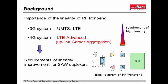Now I start from the background. Linearity performances of RF front-end portion in cellular handsets are getting very important recently. This is because to realize inter-band carrier aggregation in a fifth-generation system, very high linearity is required to the RF front-end. In this context, improvement of linearity performances of SAW filters is highly desired.